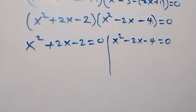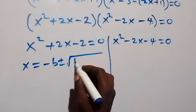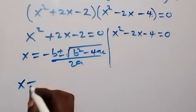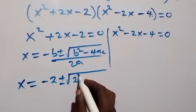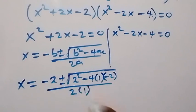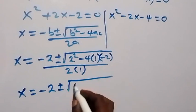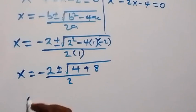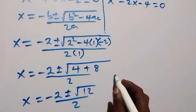We solve the first quadratic x squared plus 2x minus 2 equals 0 using the quadratic formula: x equals minus b plus or minus square root of b squared minus 4ac, over 2a. Here a is 1, b is 2, c is minus 2. This gives x equals minus 2 plus or minus square root of 4 plus 8, all over 2, which is minus 2 plus or minus root 12 over 2.